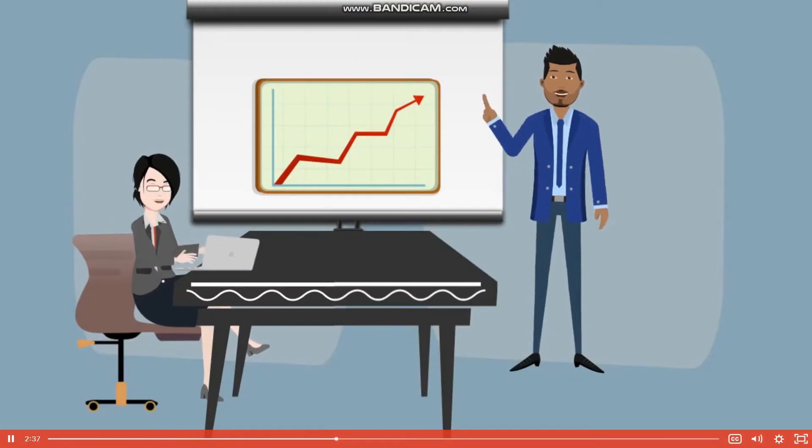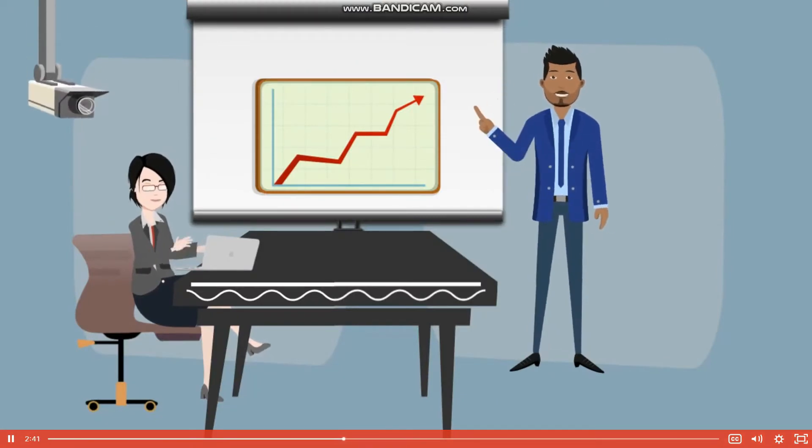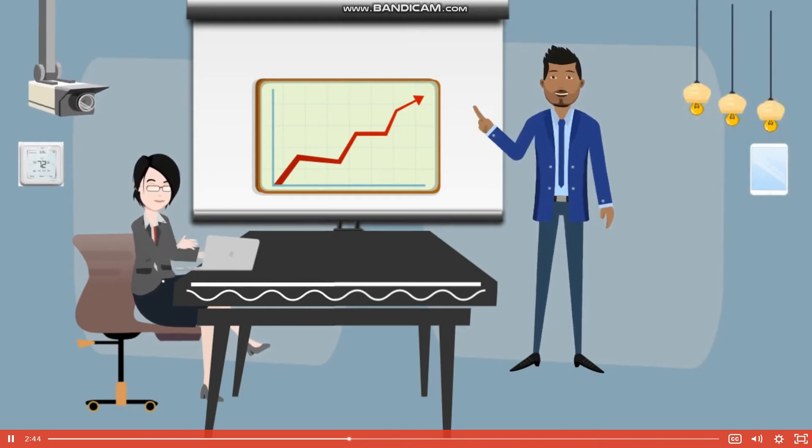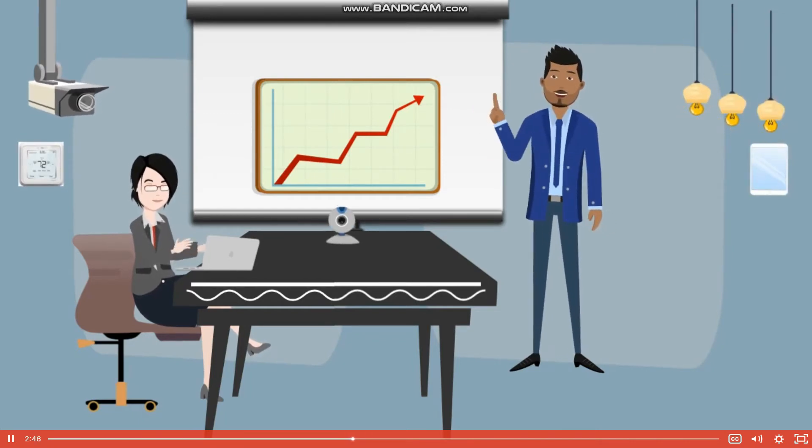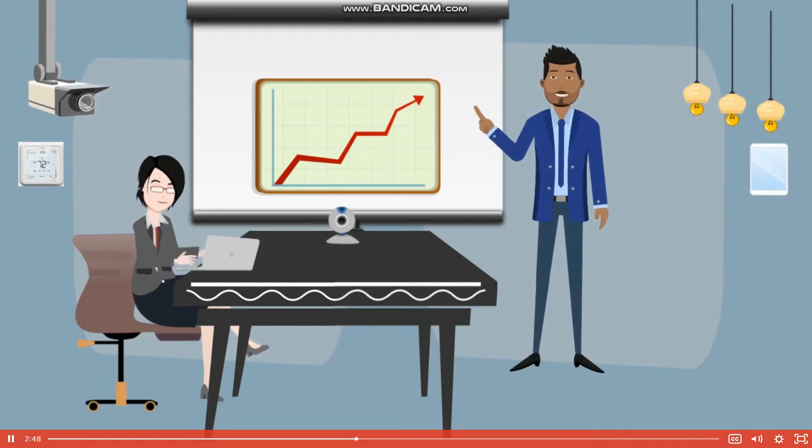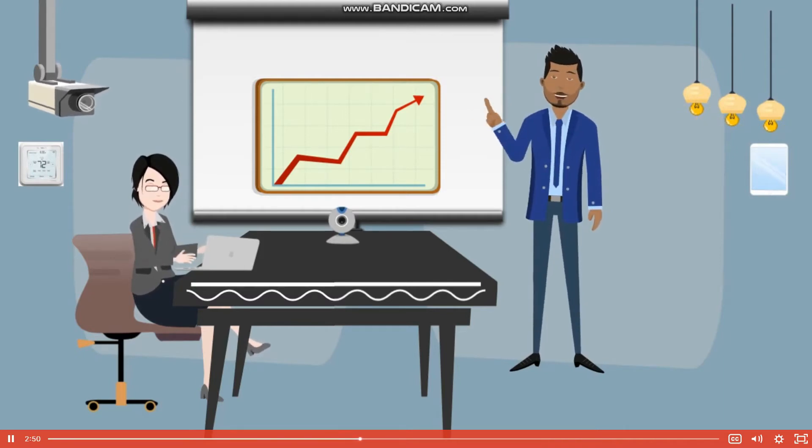IOT devices are deployed in business networks as well, to connect security cameras, control lighting and thermostats, and measure room occupancy and usage. Their convenience has made them very popular, and the number of devices have proliferated.